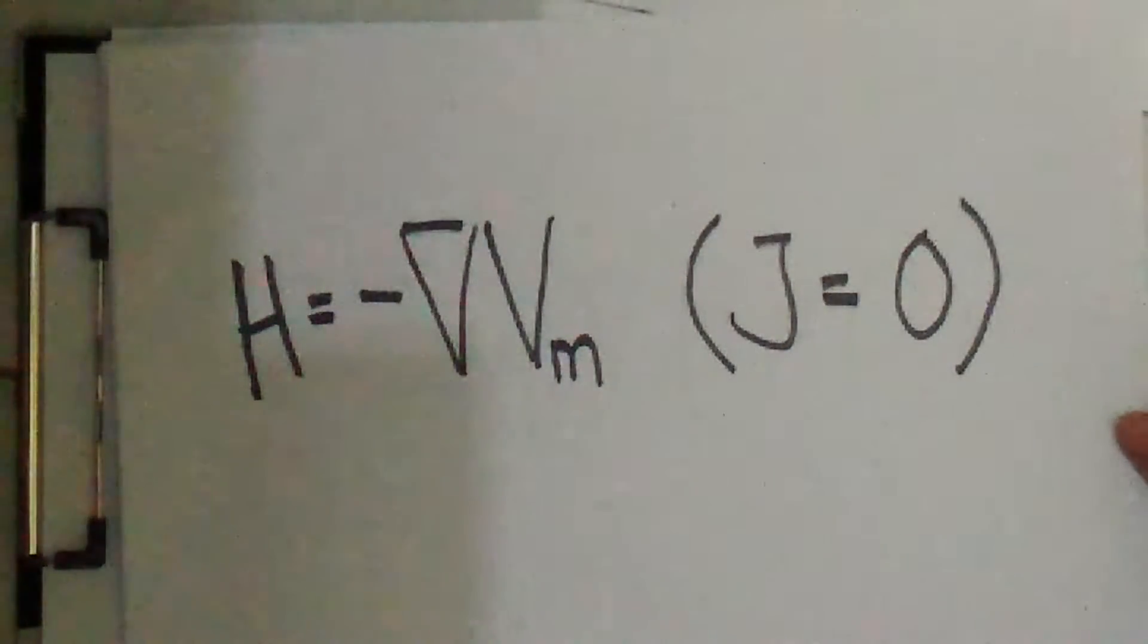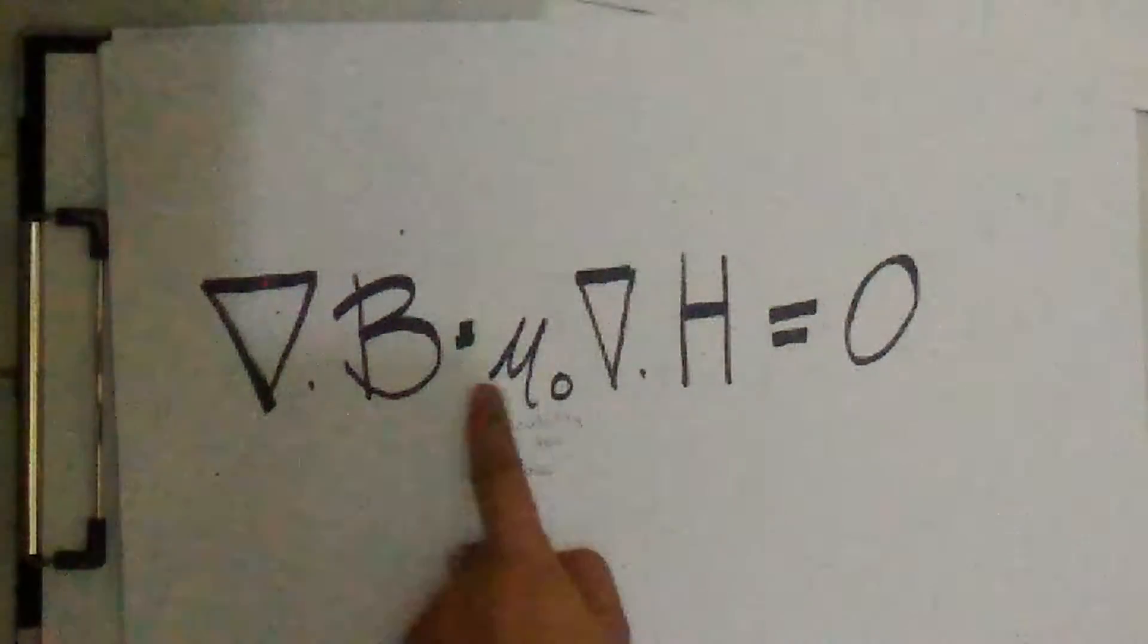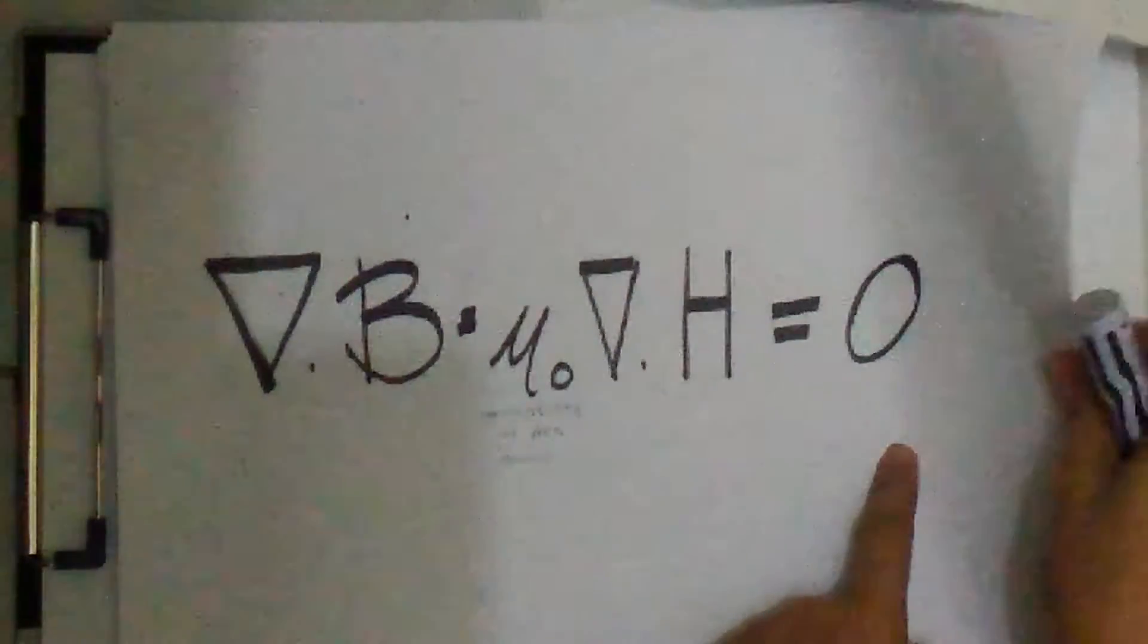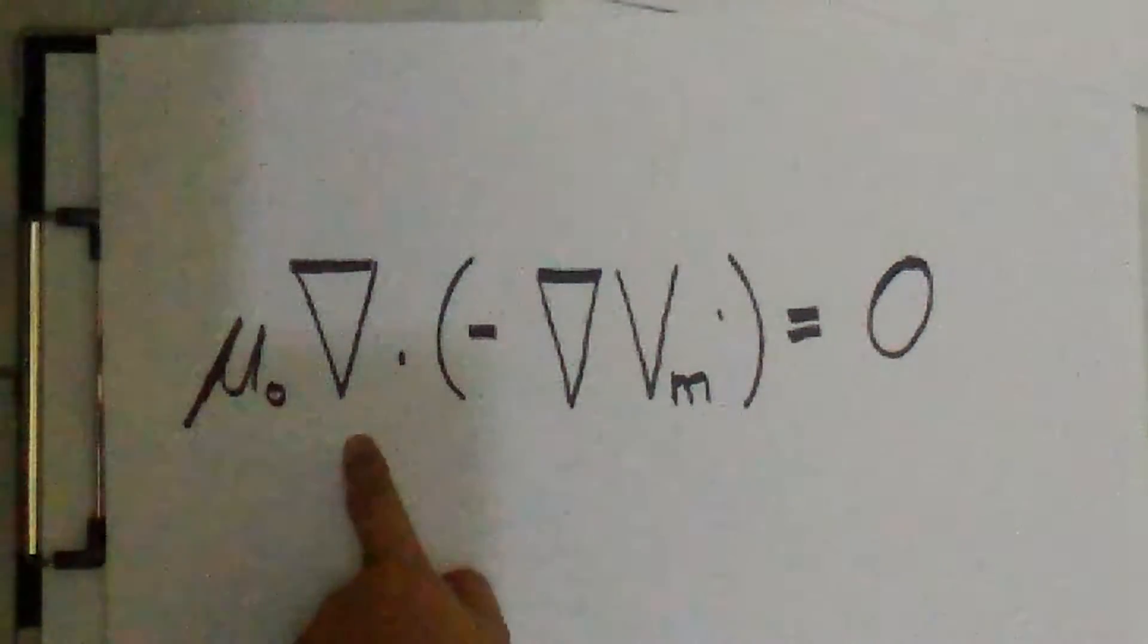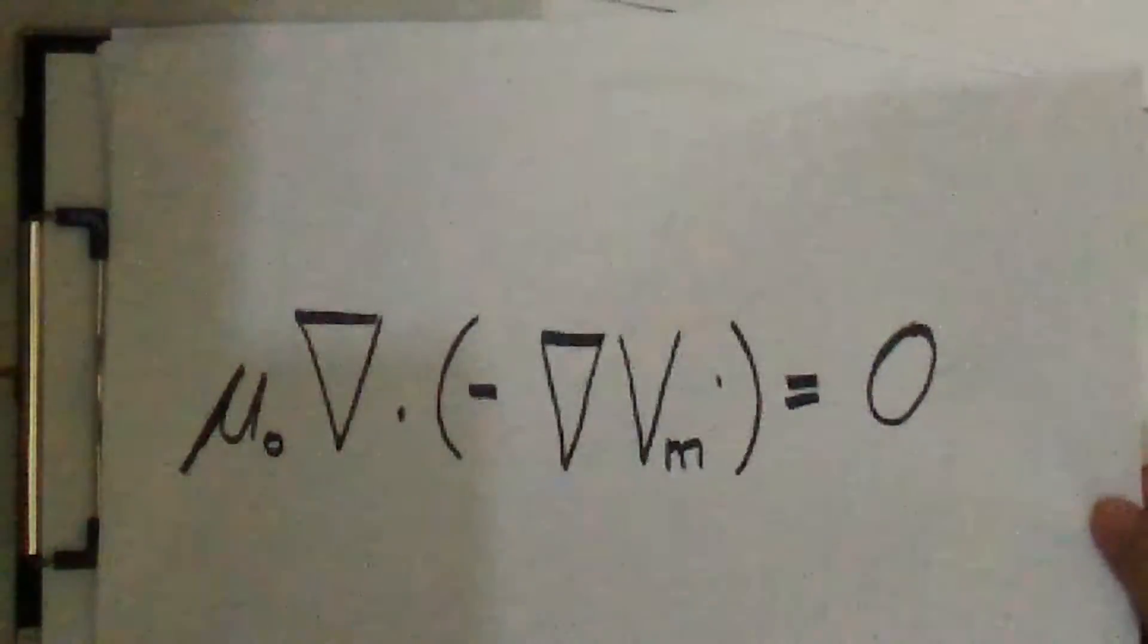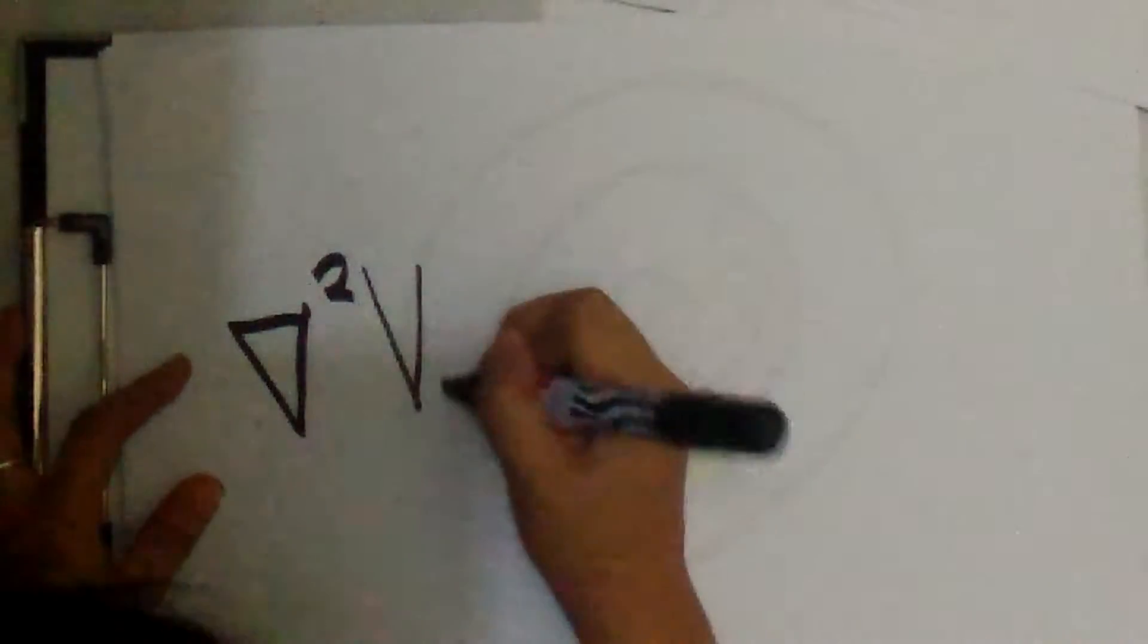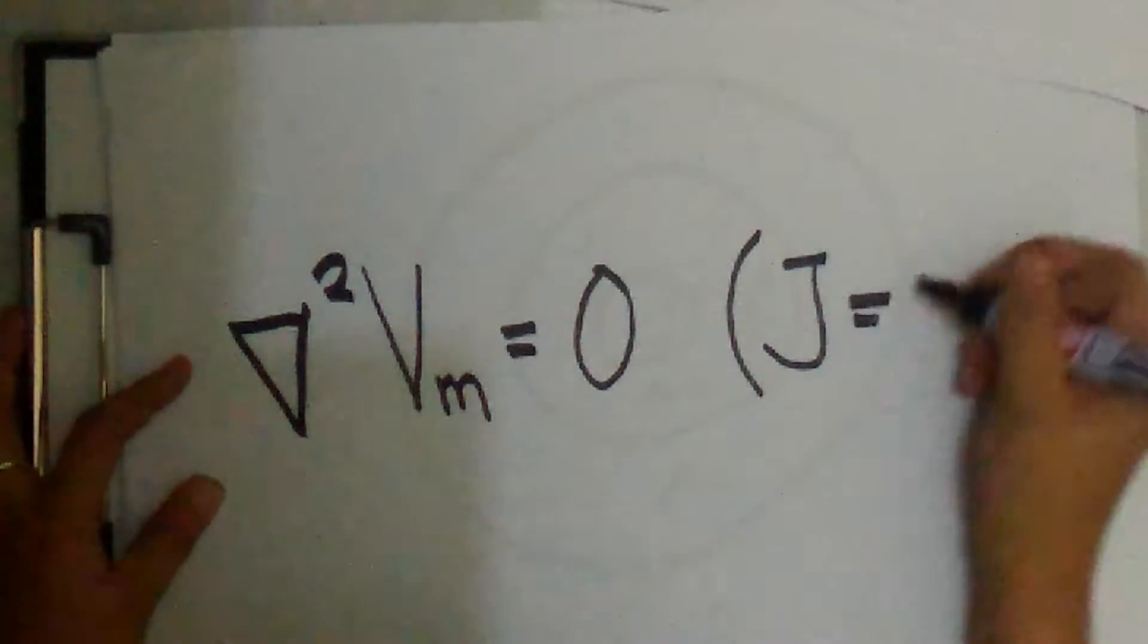This scalar potential also satisfies Laplace's equation in free space. Hence, the gradient cross product of negative gradient Vm is also equal to 0. So we have gradient squared Vm is equal to 0 where J is also equal to 0.